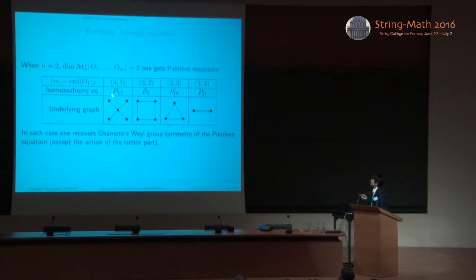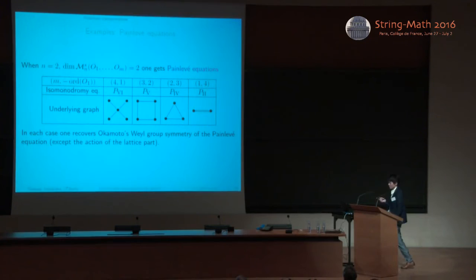So in our case, the four Painlevé equations appear. And in each case, we recover, we can recover Okamoto's Weyl group symmetry of the Painlevé equations, except the action of the lattice part. The action of the lattice part is given by the Schlesinger transformation. And so we cannot construct the Schlesinger transformation using the Katz middle convolution. But anyway, finite Weyl group part can be recovered.